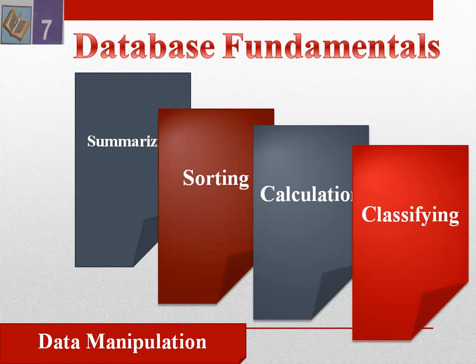The first data manipulation operation is classifying. Classifying is the process of organizing data into classes or groups. For example, data in a college can be classified into two groups: data of students in one group and data of teachers in another group.